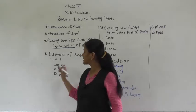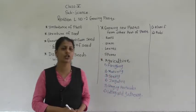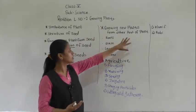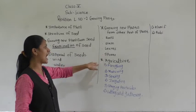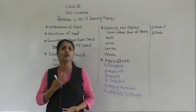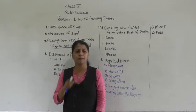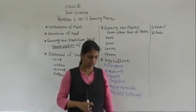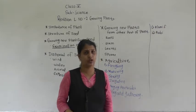We discussed how dispersion of seeds takes place with examples. We also discussed how new plants can grow from other parts of the plant — by root, stem, leaves, and spores. These parts are called vegetative parts. The method of growing plants from vegetative parts is called vegetative propagation.